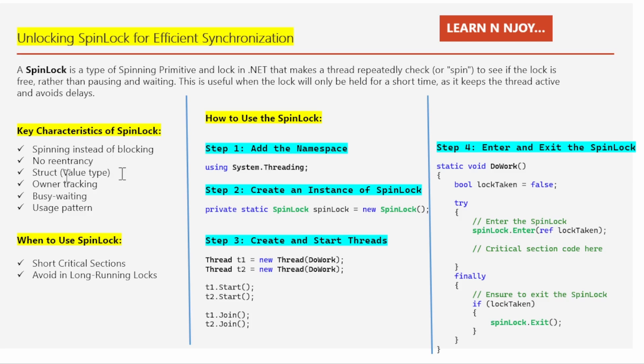Number three: a struct value type. A spin lock is a struct, not a class. This means it avoids the overhead of object allocation, but it also means that accidentally copying it can lead to errors. We must be very careful to pass it by reference, especially if used across methods.